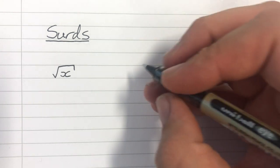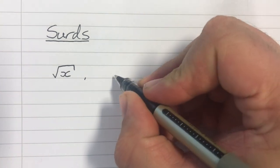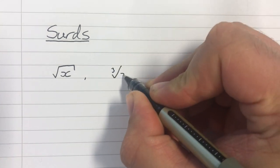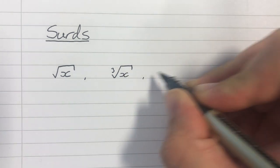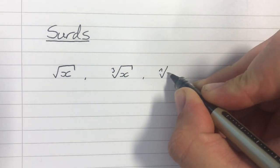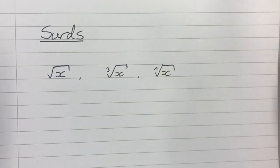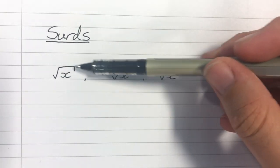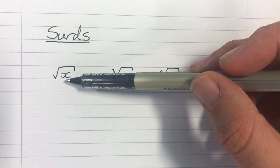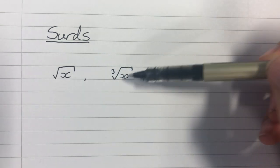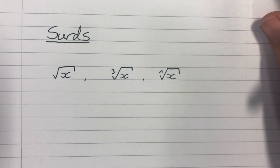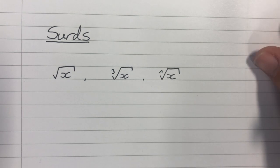For example, here we have the square root of x, or we may have the cube root of x, or indeed any nth root of x is referred to as a surd. In this video, I'll be focusing mainly on the square root, but you can apply the same theory to any root.